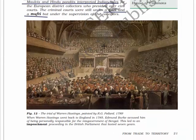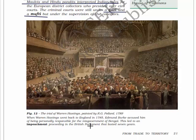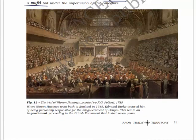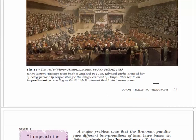Here you will see the image: Trial of Warren Hastings painted by T.G. Pollard in 1789. When Warren Hastings went back to England in 1785, Edmund Burke accused him of being personally responsible for the misgovernment of Bengal, and this led to impeachment proceedings in the British Parliament that lasted seven years.